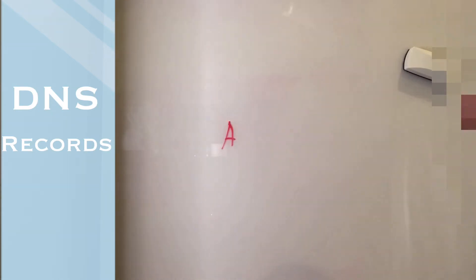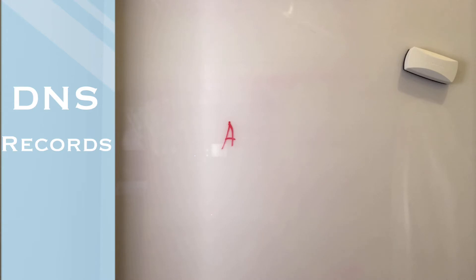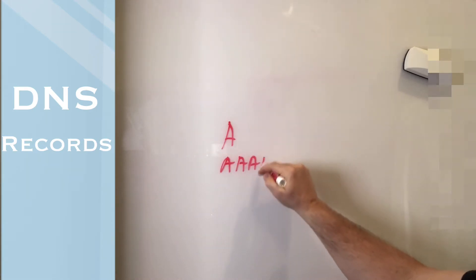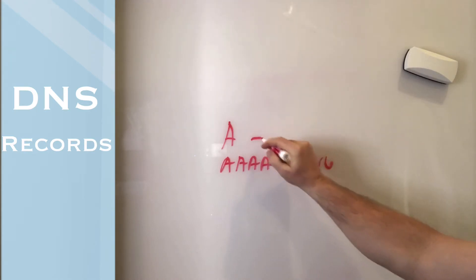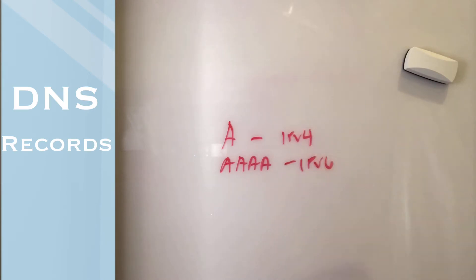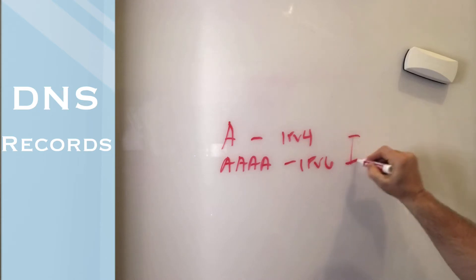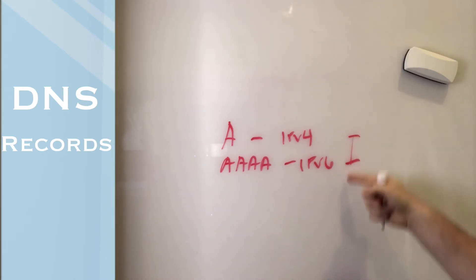Probably one of the first records people will notice is the A record, also known as the address mapping record. This is your DNS host record — it stores the host name and its corresponding IPv4 address. When you have an IPv6 address, it changes to a completely different kind: a Quad A or IPv6 address record, which effectively does the same thing. It's quite possible to have both an IPv4 and an IPv6 address assigned, and when people say a domain is on a certain IP, they're referencing one of these two records.